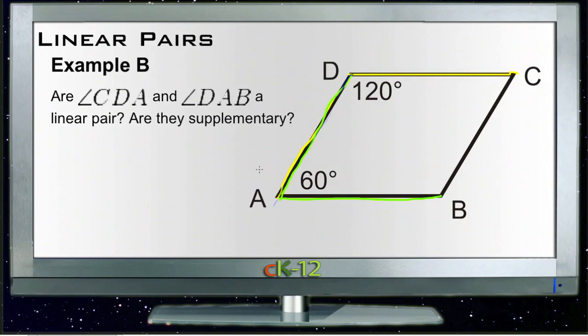If DCA were over here like this so that those two actually shared that side, it was the side between them, then those would be considered a linear pair assuming they added up to 180 degrees. But since they aren't sharing that side, it's not the side in between the two, they can't be a linear pair. So they are not a linear pair.